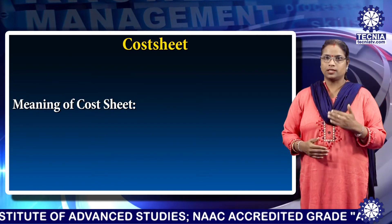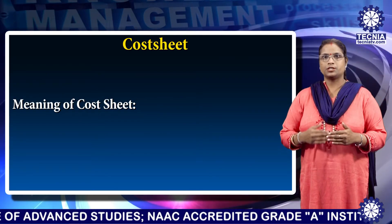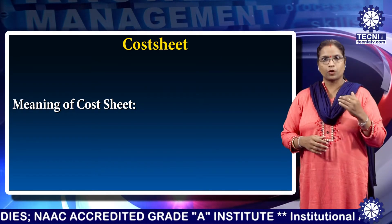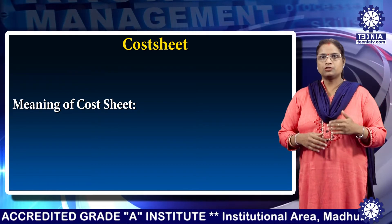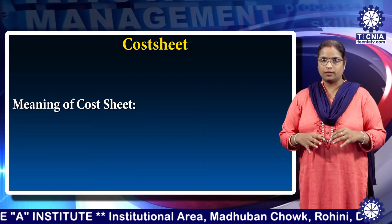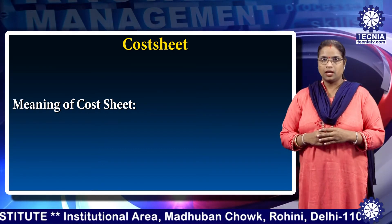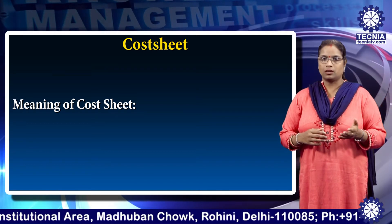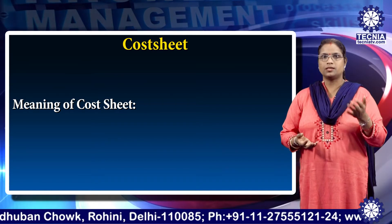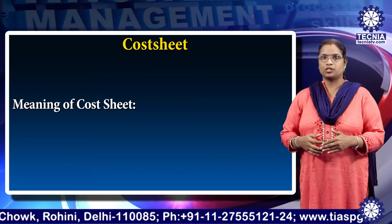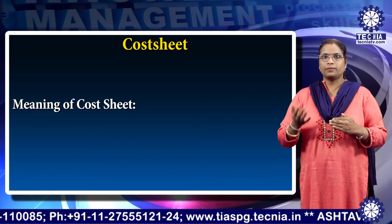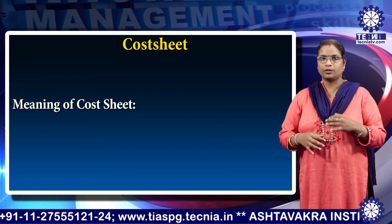A cost sheet is a statement which presents detailed information relating to various stages of cost associated in a product, production, or a job. It also shows the total cost of the product manufactured during a particular period of time. It is used to compile the profit on a product or a job and can form the basis for setting prices on similar products in the future. Various costs listed on a cost sheet usually include charges for actual material and labor cost incurred during and after production.